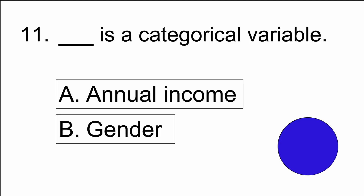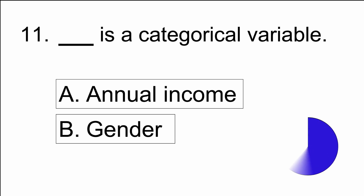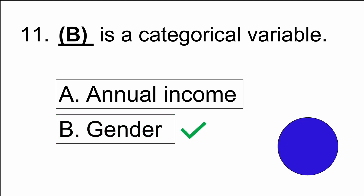Number eleven: blank is a categorical variable — A) annual income, or B) gender. The answer is B) gender.